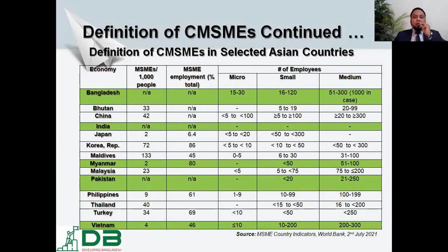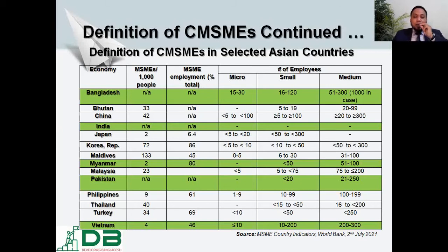To compare with selected Asian countries, we can look at one indicator — employment. In Bangladesh, micro is 5 to 30 employees. In Japan, 16 to 120 is small and 51 to 300 is medium, though for labor-intensive sectors it is up to 1,000. In Bhutan, there is no micro segment — 5 to 19 people is small and 20 to 99 is medium. In Japan, less than 50 is small and 50 to 300 can also be termed small industry, while above 300 is medium.